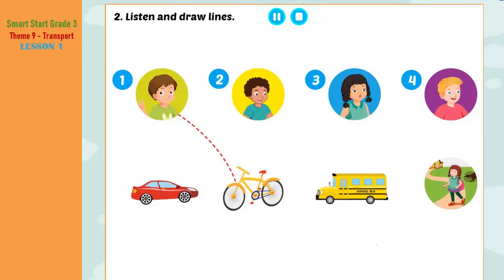Two. How do you go to school, Cody? I go to school by car. Three. How do you go to school, Mai? Me? I walk to school.